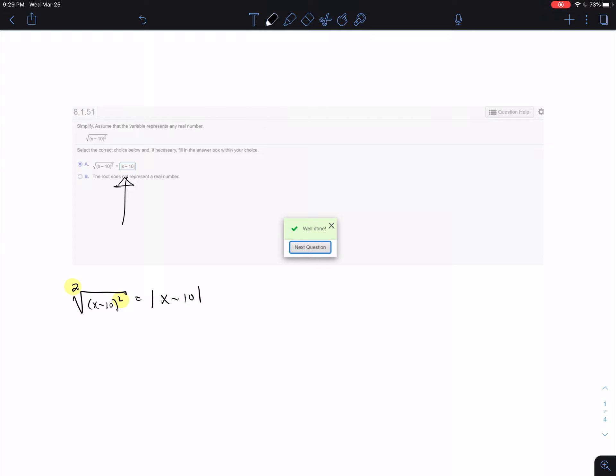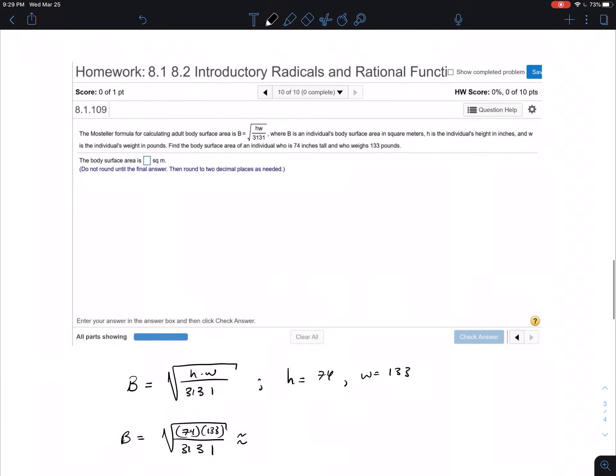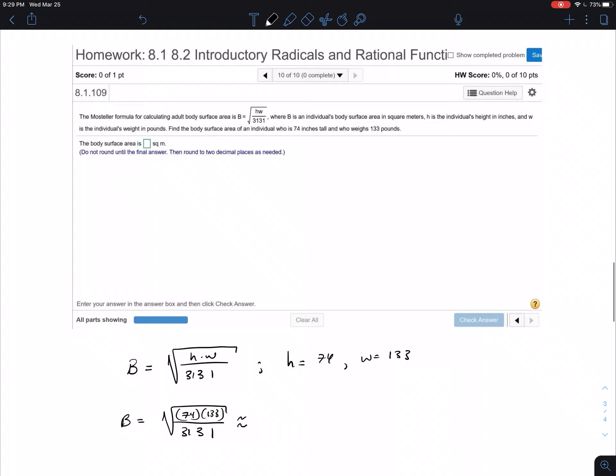Okay, that was fun. All right, second problem we had here was the Mostella formula for calculating adult body surface area is b equals the square root of the product of hw over 3131, where b is the individual's body surface area in square meters and h is the individual's height in inches.